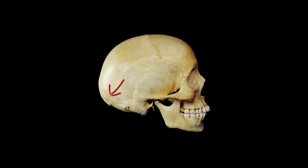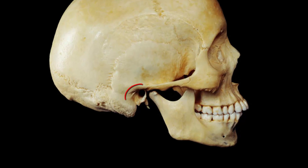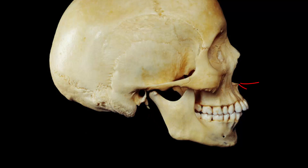Some structures we can see here are the external auditory canal, the mastoid process, the styloid process, and here is the nasal spine. This right here is going to be the mandibular condyle, the mandibular angle, and this part sticking up is the coronoid process.